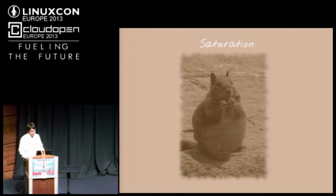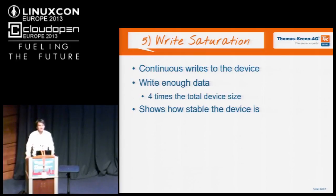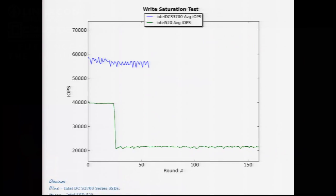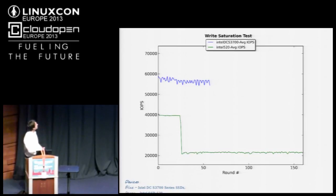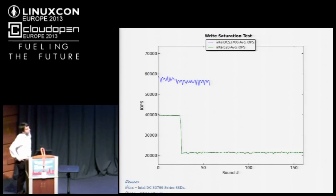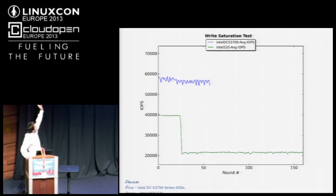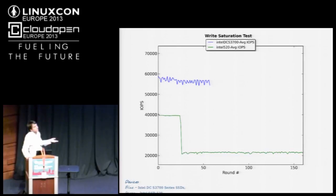Next is write saturation. We try to write to the device as much as possible — writing four times the total device size. An interesting combined diagram compares an Intel 520 SSD, which is a consumer SSD, with an Intel Enterprise SSD shown in blue. The consumer SSD's performance drops down quite soon, after about 25 rounds, but the Enterprise SSD stays stable. The blue line stops sooner because we can do more IOPS on the enterprise device, and since we're writing the device four times we need fewer rounds to finish the write saturation test.